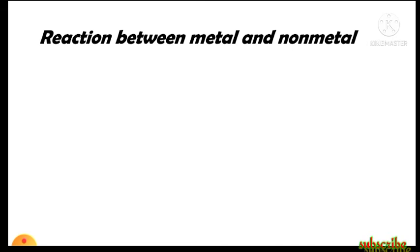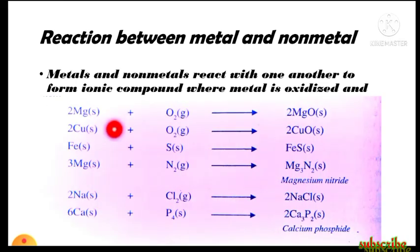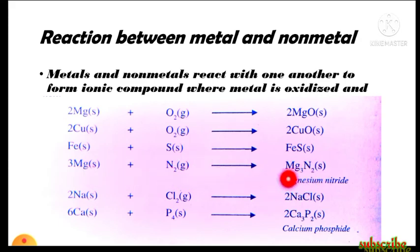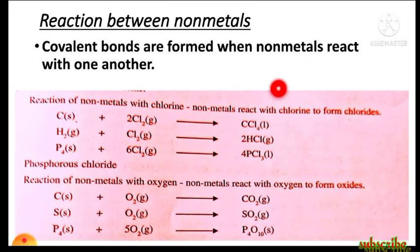First, the reaction between metals and nonmetals: metals and nonmetals react with one another to form compounds where the metal is oxidized and the nonmetal is reduced. For example: magnesium reacts with oxygen forming magnesium oxide; copper with oxygen forms copper oxide; iron with sulfur forms iron sulfide; magnesium with nitrogen forms magnesium nitride; sodium with chlorine forms sodium chloride; and calcium with phosphorus forms calcium phosphate. Since metals are electropositive and nonmetals are electronegative, these compounds are generally ionic in nature.